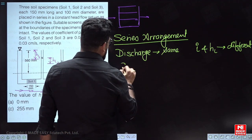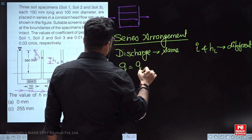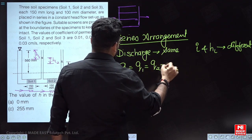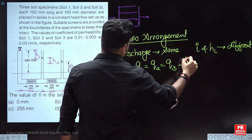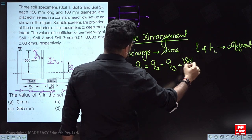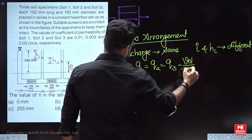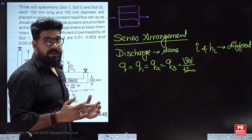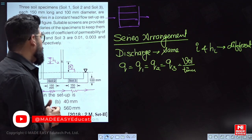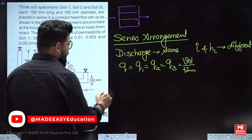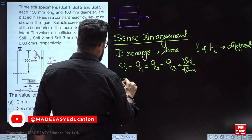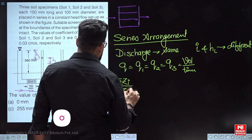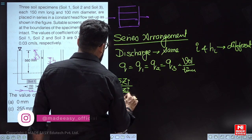Q equals Q1 equals Q2 equals Q3 — discharge is equal throughout, measured as volume divided by time. This is a rule, always follow it. Total discharge Q equals the summation of Zi divided by the summation of Zi over Ki.